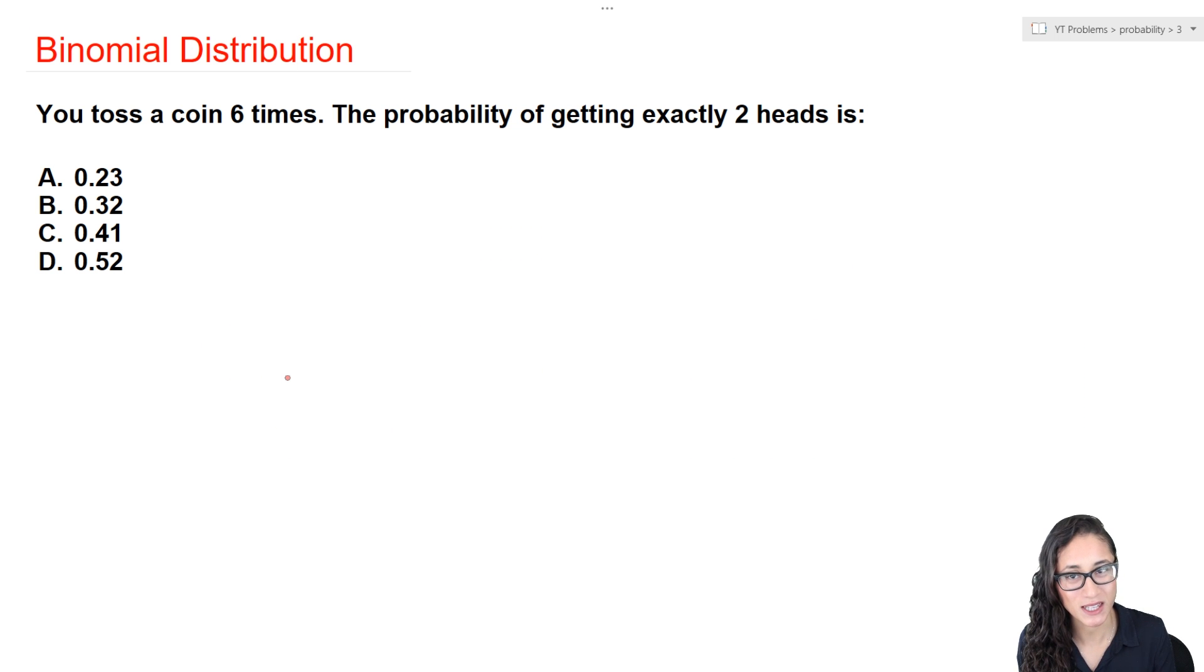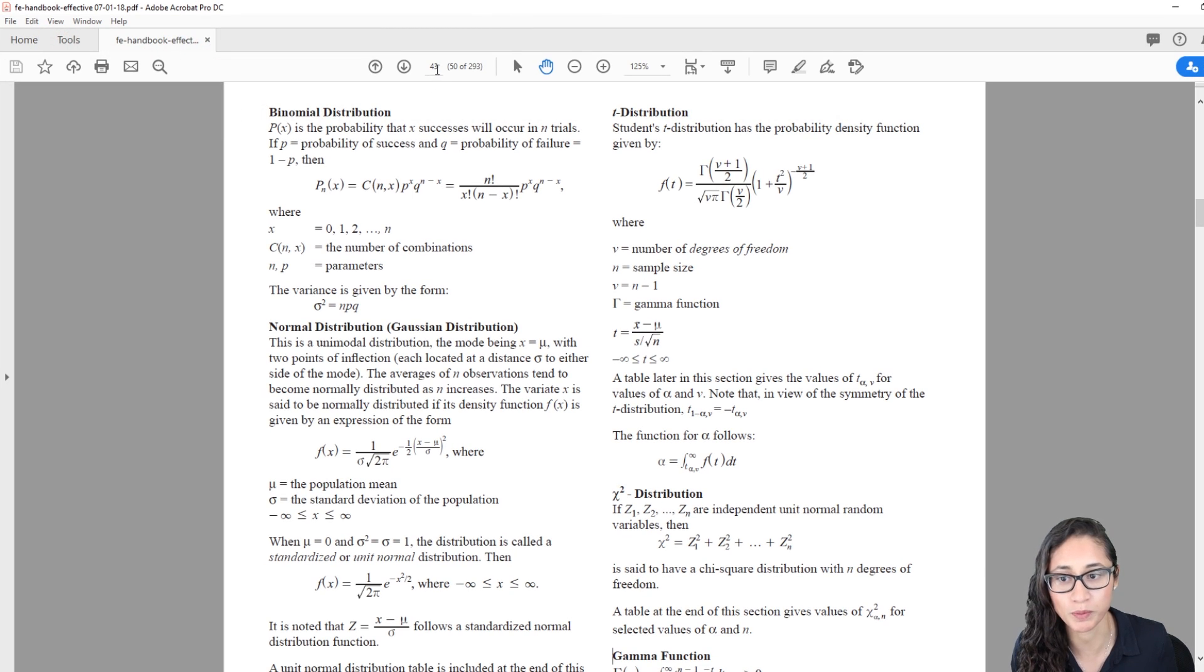You toss a coin six times and we want to find what is the probability of getting exactly two heads. So whenever you get a problem like this, when the question asks what is the probability of getting exactly this number or what is the probability of success, and in this case the success of getting exactly two heads, we use the equation binomial distribution, which is on page 43. So this is the equation we're going to use.